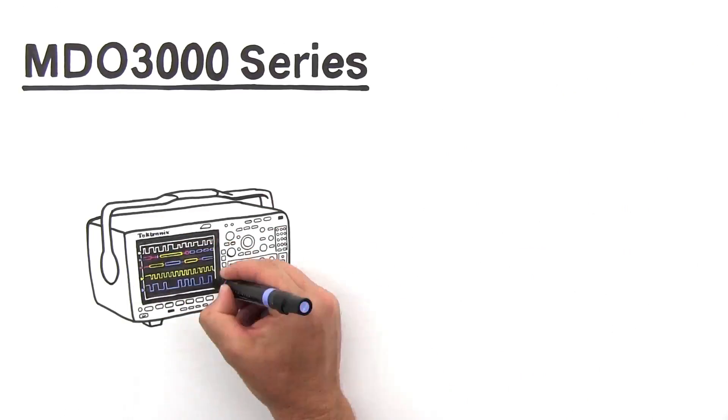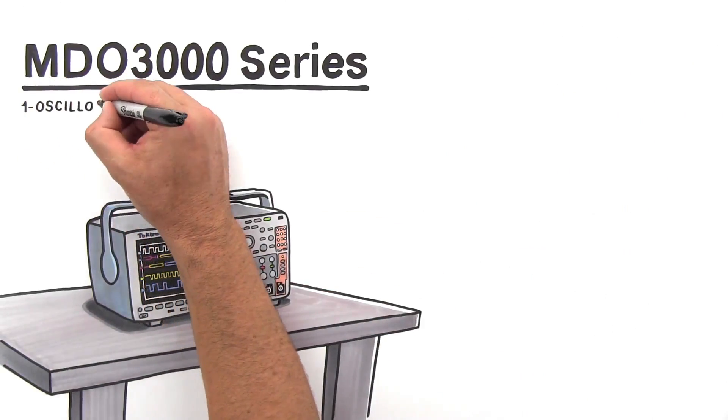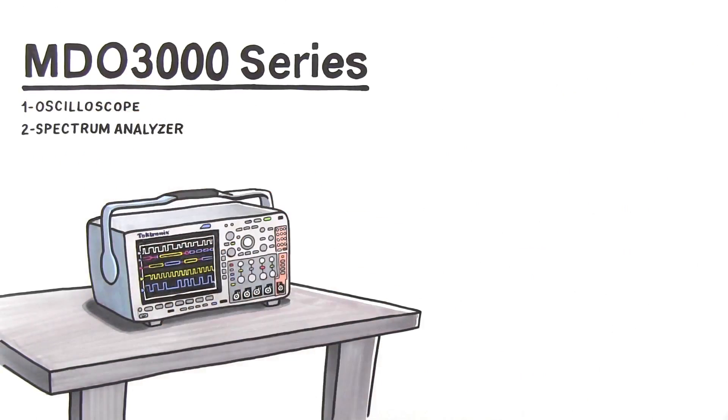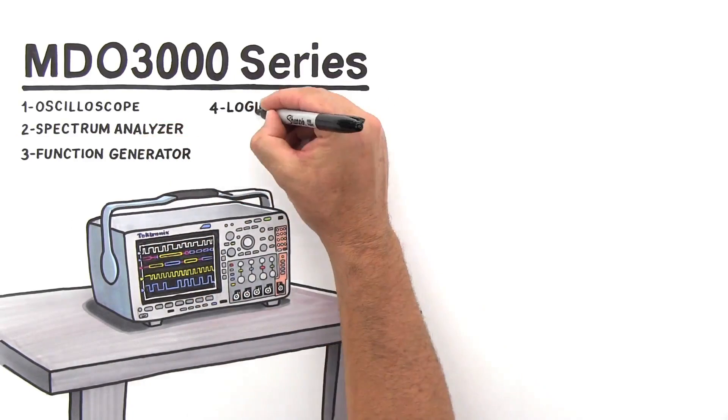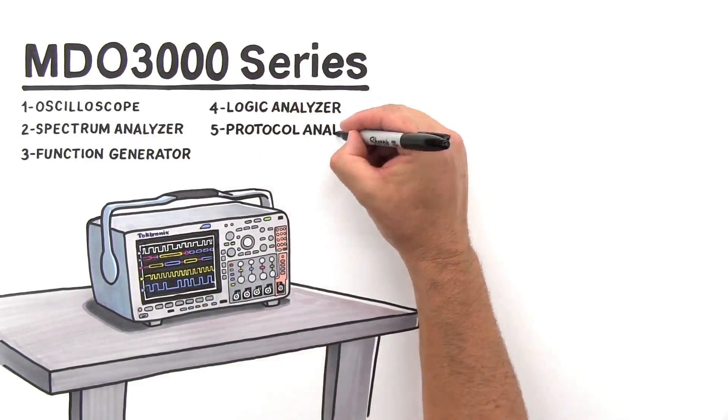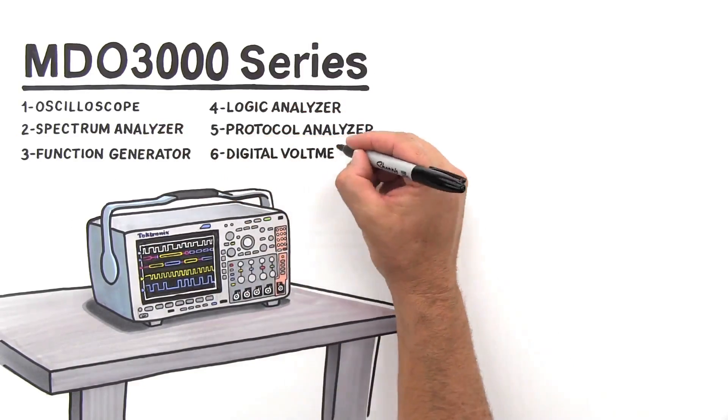Introducing the MDO 3000 Series Mixed Domain Oscilloscope. The only oscilloscope with a built-in spectrum analyzer, function generator, logic analyzer, protocol analyzer, and digital voltmeter.